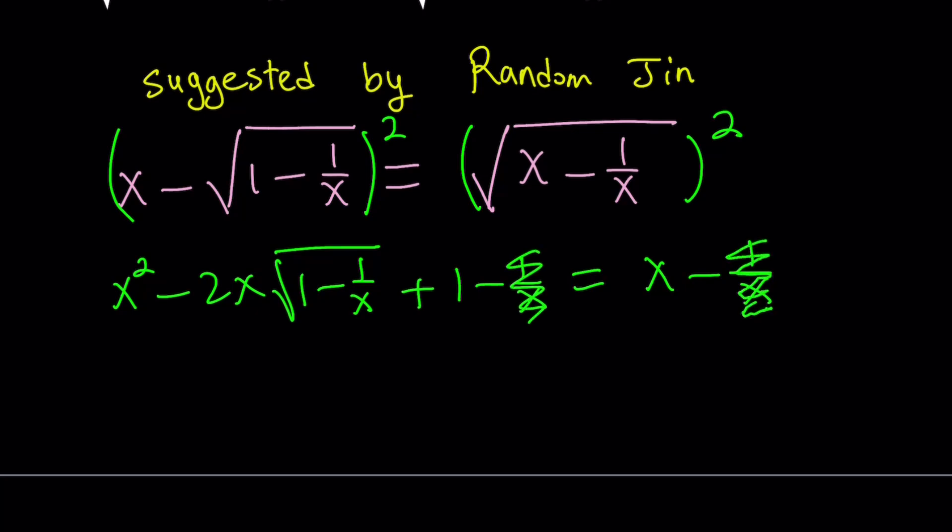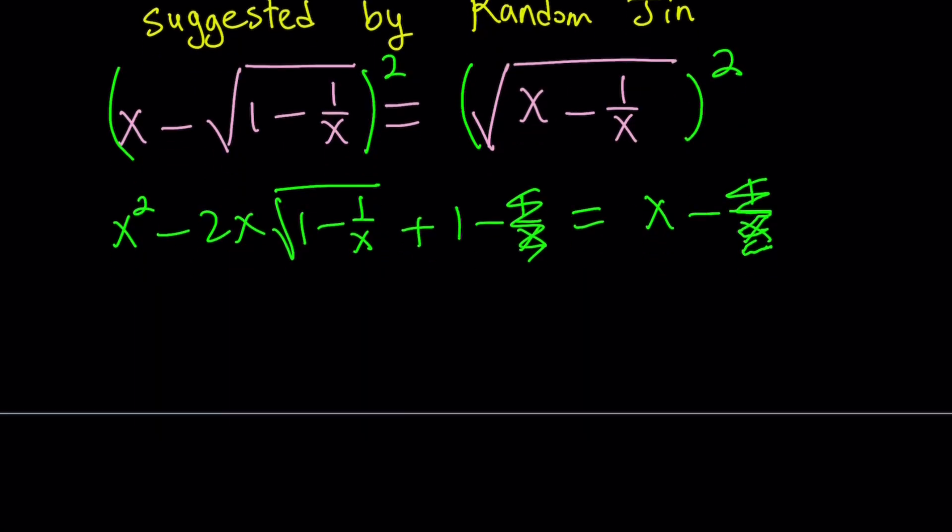You should see immediately that 1 over x cancels out. Now we end up with something like this. Let's go ahead and put the radical on the right hand side and bring over the x to the left. x squared minus x plus 1 equals 2x times square root of 1 minus 1 over x.